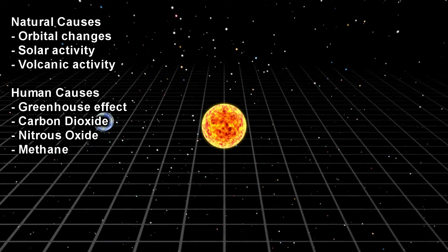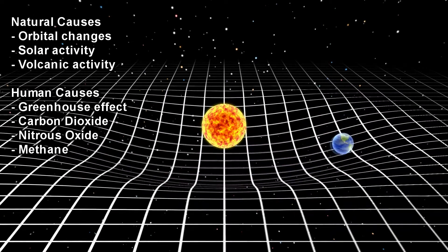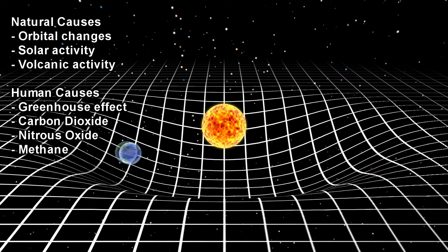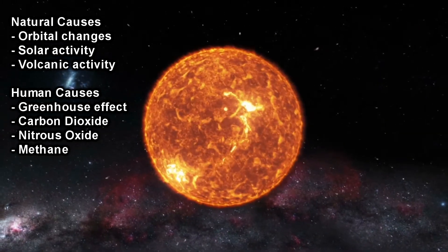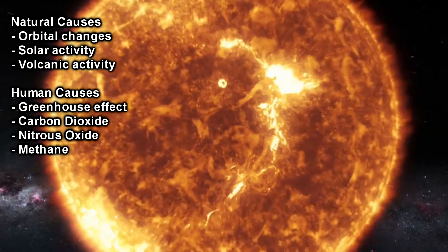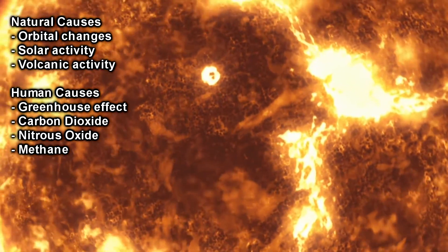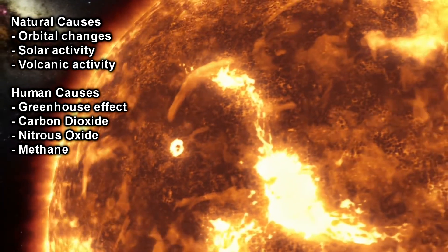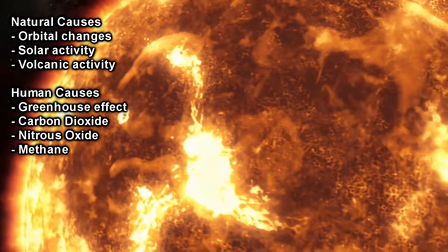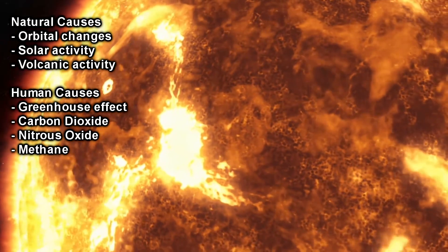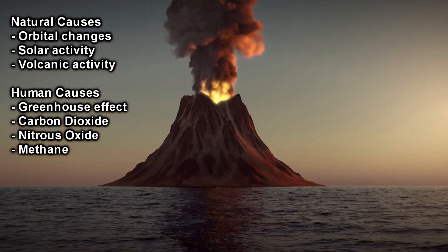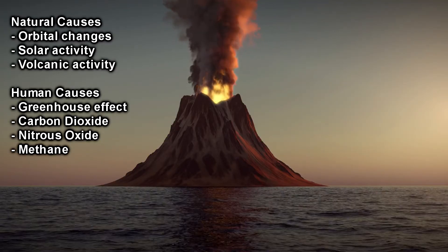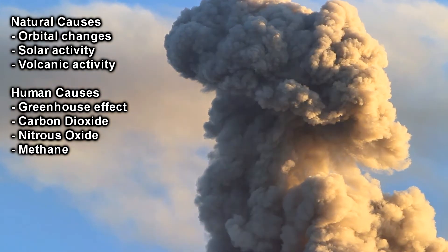Orbital changes refer to how the orbit of the earth isn't consistent — sometimes we get closer to the sun, sometimes further away. Solar activity refers to the sun putting out different levels of energy and solar output; sunspots also produce more solar activity and could affect our climate. Volcanic activity releases huge amounts of ash, gases, and liquids, which in the short term can affect our climate.